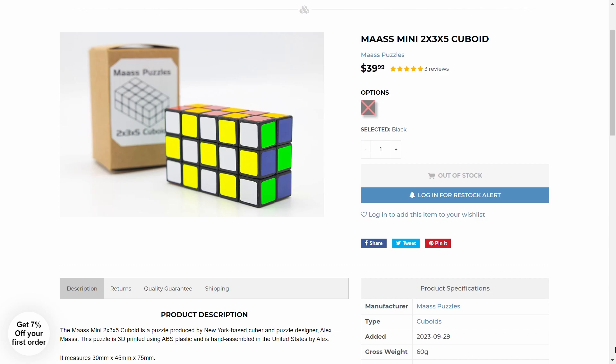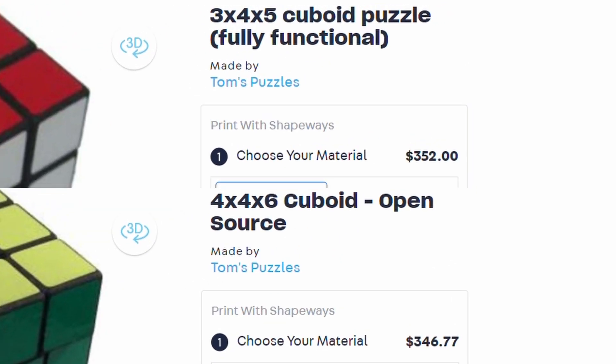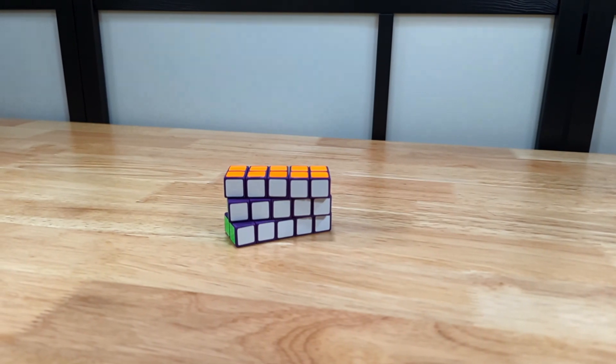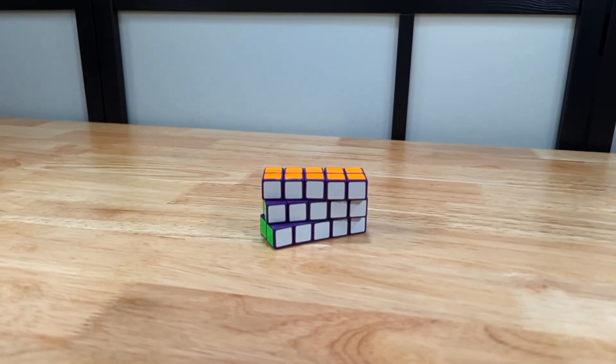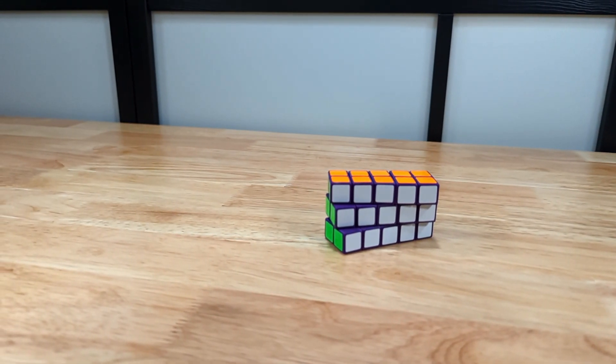I'd also like to highlight quickly just how far 3D printed puzzles have come down in price this decade. Just look at the prices of the aforementioned cuboids in Tom's Shapeways shop. The advent of consumer-grade FDM printers has made custom puzzles so much more accessible. So that's my review of Alex Mass's Mini 2x3x5 distributed through the cubicle. Now I'll scramble and solve it right after this b-roll.